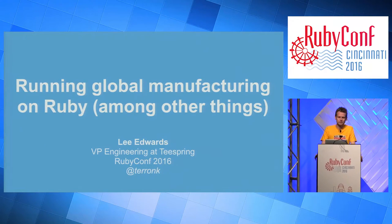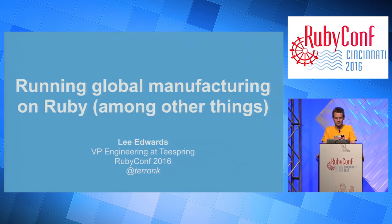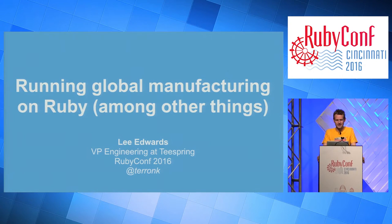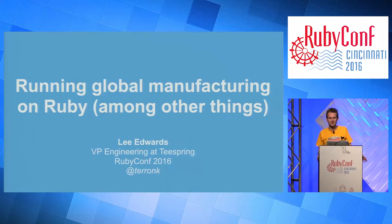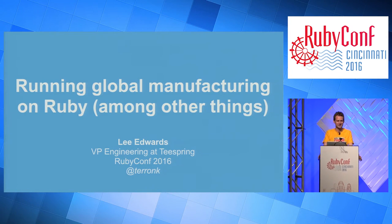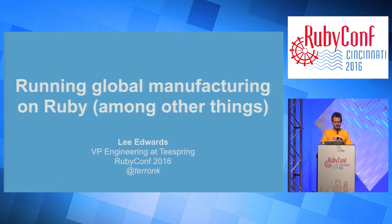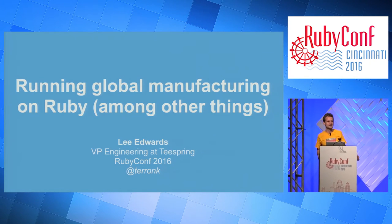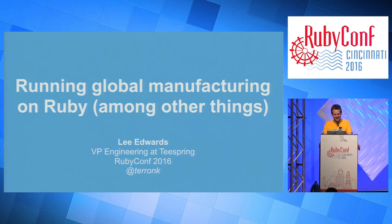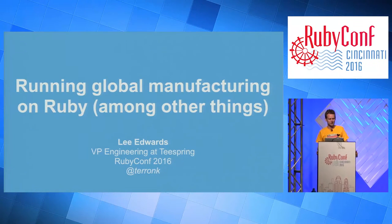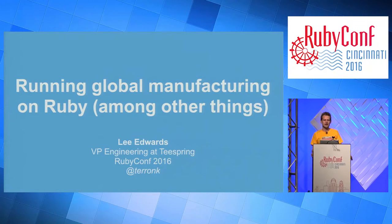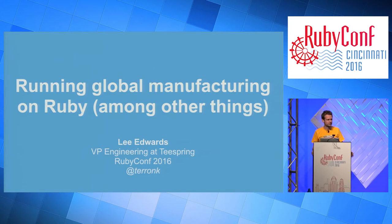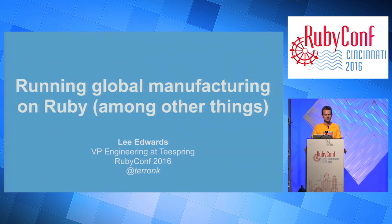I'm Lee Edwards, the VP of Engineering at Teespring. I get to follow up probably the cutest tech talk I've ever seen in my entire life. If you didn't see the talk on father-daughter pair programming, you should definitely go to Confreaks and check that out. I want to talk about how we do global manufacturing at Teespring using Ruby — and in the fashion of 2016 Ruby talks, we also use lots of software that isn't Ruby.